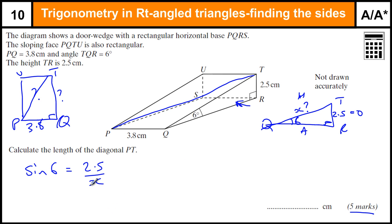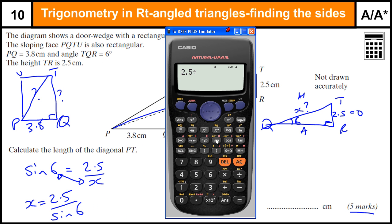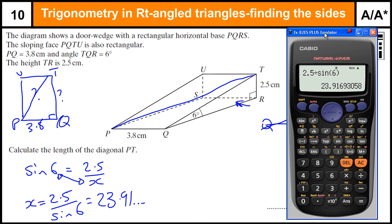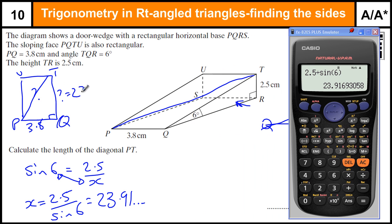If you use the formula triangle, you could have written this straight out as X equals 2.5 over sine 6. I'm just going to show you a little trick with algebra. If you've got a whole number equals a fraction, you can swap the whole number and the bottom of the fraction round. So we've got 2.5 over sine 6 equals X. Let's bring the calculator in. 2.5 divided by sine of 6 gives me 23.91 and some more. I'm going to keep that value in the calculator. That's going to be my 23.9 there.